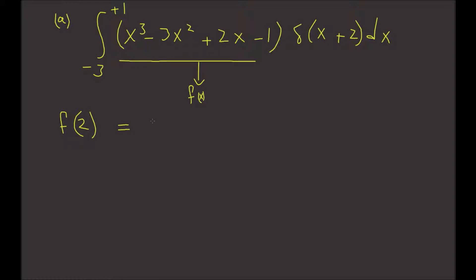So it's going to be 2³ - 3(2²) + 2(2) - 1. Then you do the math, you get -25.